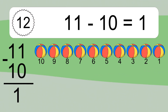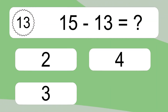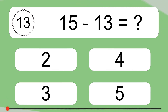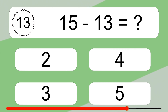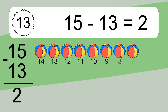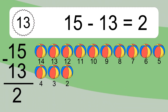4 minus 2 equals 2. Let's count it: 3, 2. 11 minus 10 equals what? 11 minus 10 equals 1. Let's count it: 10, 9, 8, 7, 6, 5, 4, 3, 2, 1. 15 minus 13 equals what? 15 minus 13 equals 2. Let's count it: 14, 13.